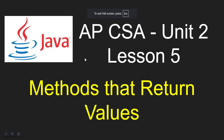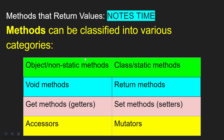Hey everybody, it's Mr. Perry. Here we go — Unit 2, Lesson 5. This time we're talking about methods that return values. Let's hop into it. We're going to pause here really quick and talk about all of the different classifications for methods. This is good to keep in mind as we start to move forward.